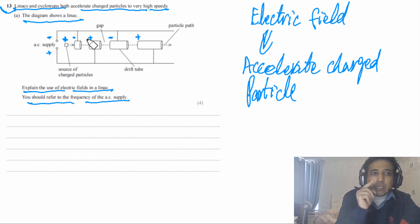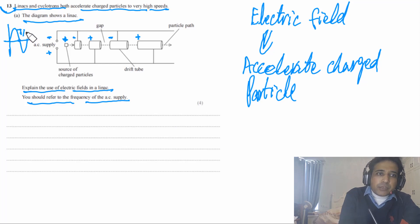Imagine we are accelerating positively charged particles. One tube is connected to the negative terminal and the adjacent tube to the positive terminal, alternating along the linac. When the positive particle reaches a gap and the next tube is positive, it would decelerate due to repulsion. So we need the polarity to switch by the time the particle exits a drift tube. For an AC supply, polarity changes after every half cycle, so the time spent in each drift tube must equal T/2.